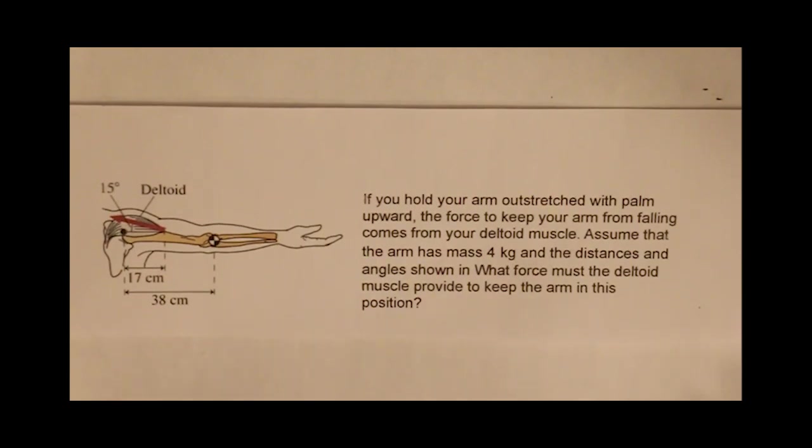As there is no rotation going on, the arm is just being held outstretched. There is no net torque. So the torque about the point in the shoulder for the deltoid muscle and the torque of the arm are both zero. We can set these two torques equal to each other.